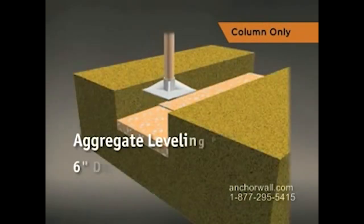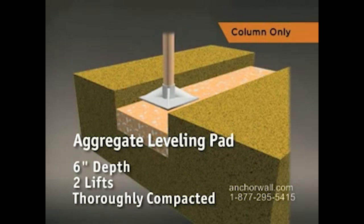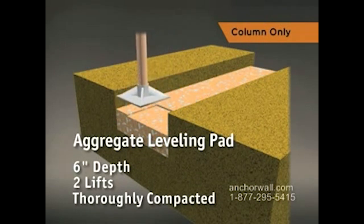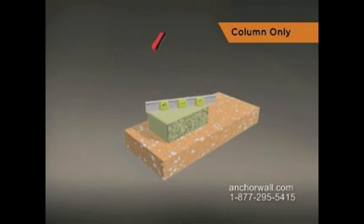The leveling pad itself should be 6 inches deep, built in two lifts and thoroughly compacted after each lift. Place the first column unit so both finished edges are six inches from the edge of the leveling pad. Level side to side and front to back.